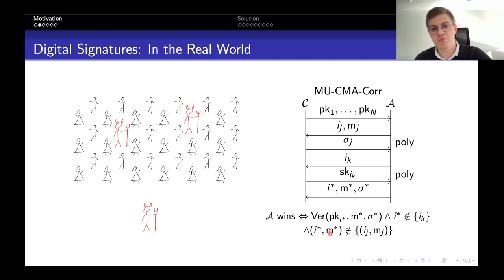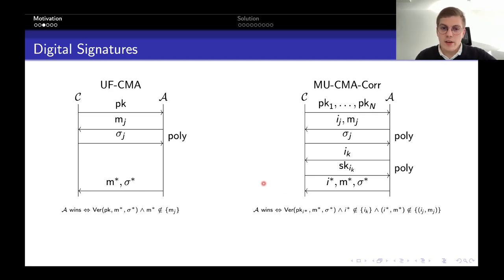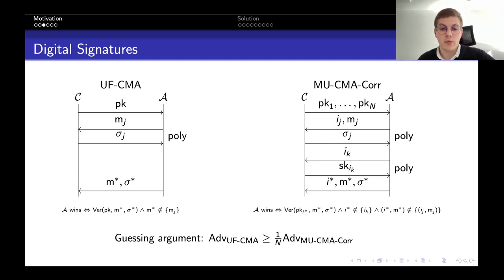This notion is closer to practical scenarios. Comparing the single-user notion on the left with multi-user security on the right, it is straightforward to see that a reduction can take a public key and embed it in a random position among n public keys. If it guesses the index i-star correctly, it wins. This guessing argument shows that asymptotically these two notions are equivalent — if you satisfy single-user security, you also satisfy multi-user security, which justifies why the single-user notion is the standard one.